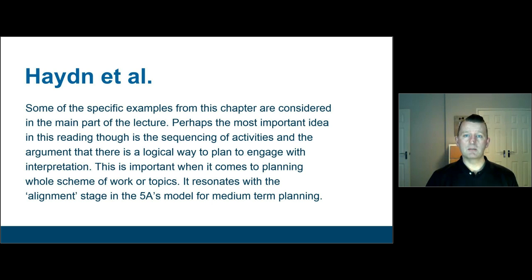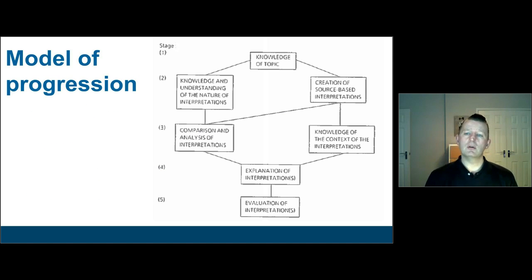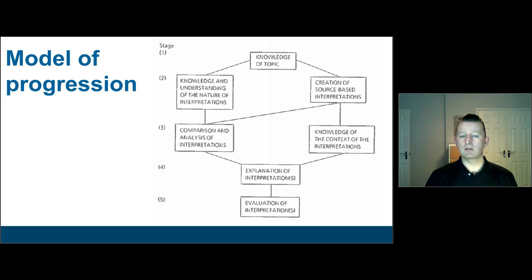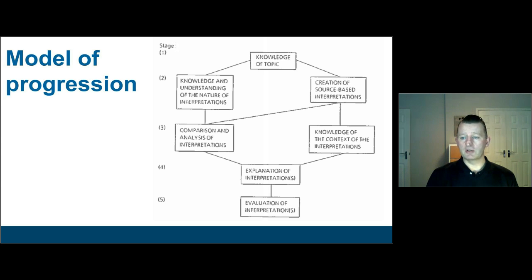This alignment stage is really important — we have to think about where we'd put interpretation work in an overall sequence of learning. In a nutshell, the view from Hayden's first chapter is that we might start with teaching knowledge of the topic. Then at the second stage, we think about knowing about different interpretations and coming up with our own based on close reading of the relevant sources. Then we come to a comparative level, comparing interpretations between themselves and back to the evidence.